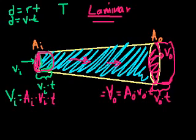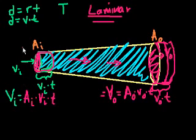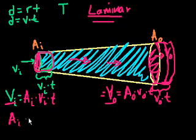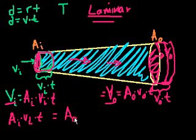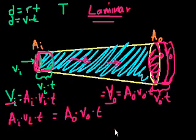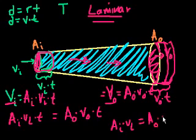This is the big aha moment: the volume in this input cylinder has to equal the volume in the output cylinder. You can't get more water out than what's going in, and you can't put more water in than what's coming out, because it's incompressible. So: A_in × v_in × t = A_out × v_out × t. Since time is the same on both sides, we get A_in × v_in = A_out × v_out.